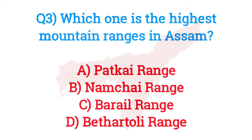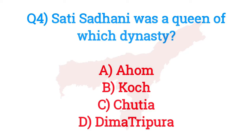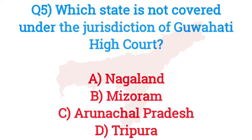Question number three: Which one is the highest mountain range in Assam? The answer is option C — Barail Range. Question number four: Sati Sadhani was a queen of which dynasty? The answer is option C — Chutiya.